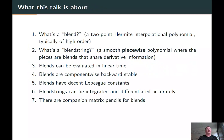What is this talk about? It's what's a blend—a high-order two-point Hermite interpolational polynomial. What's a blendstring? A smooth piecewise polynomial where the pieces are blends and the blends share derivative information on adjacent intervals. Blends can be evaluated in linear time. Blends are component-wise backwards stable numerically. Blends have decent Lebesgue constants, so they don't amplify errors in the coefficients much. Blendstrings can be integrated and differentiated accurately, which is extremely useful. And there are companion matrix pencils for blends, so we can do root finding with them.